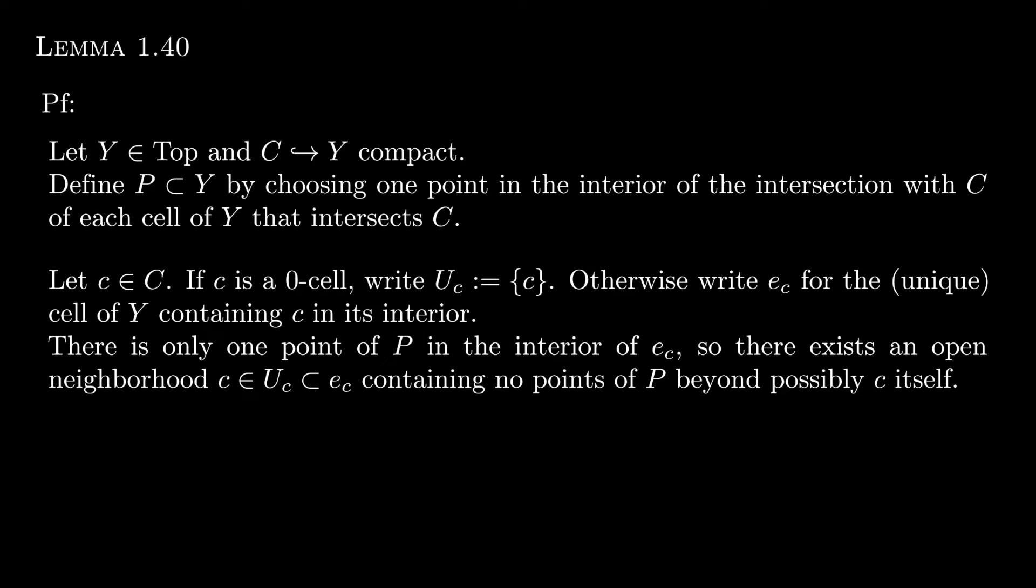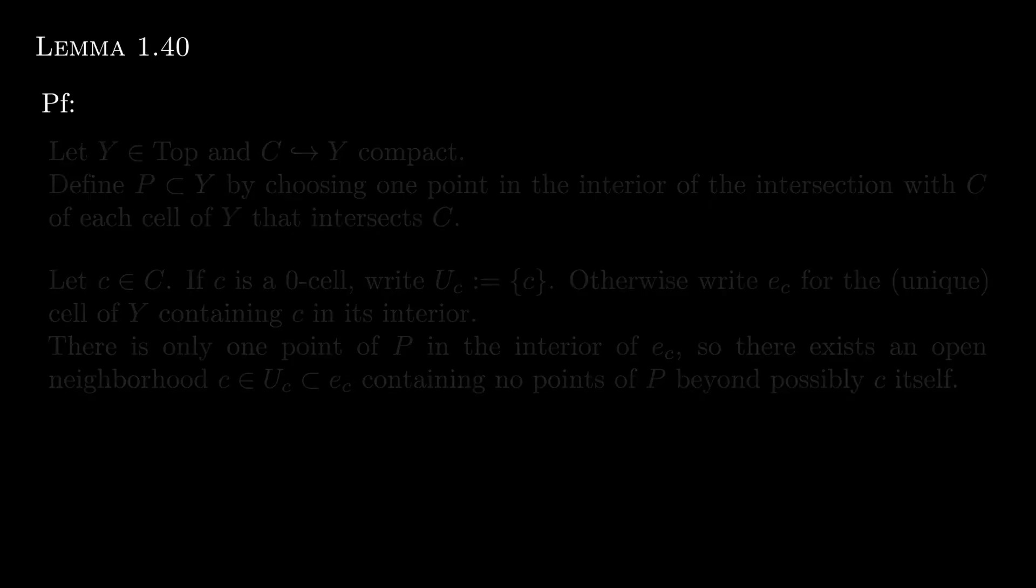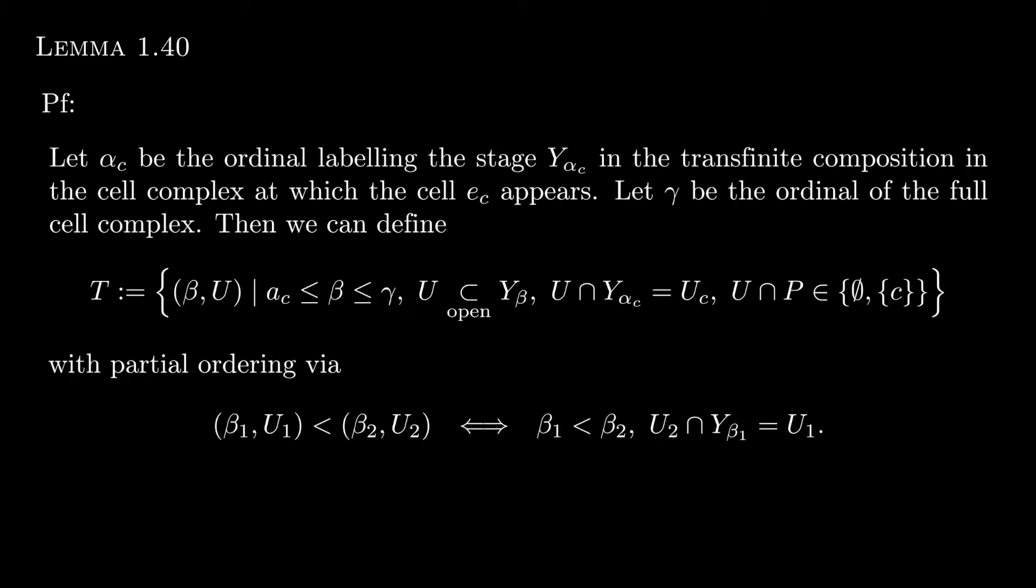The reason we're doing this is because if we can show that we can enlarge this open set UC to some open subset of the entire topological cell complex, then this would show that no point in P is an accumulation point because an open set around the accumulation point should at least contain other elements of P.